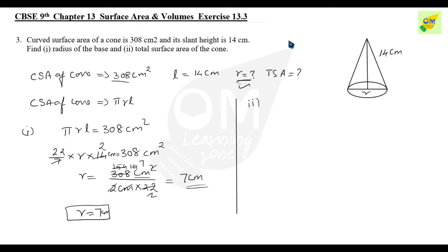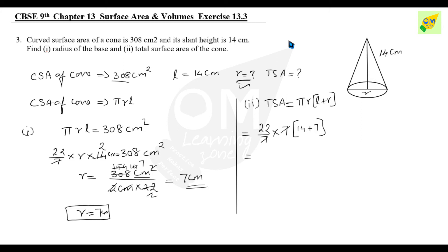First subdivision is over. Now the second subdivision: TSA — total surface area of the cone. TSA of cone equals π×r×(l + r). Using 22 by 7, with r = 7 and l = 14: that gives (22/7) into 7 into (14 + 7), which is 22 into 21.